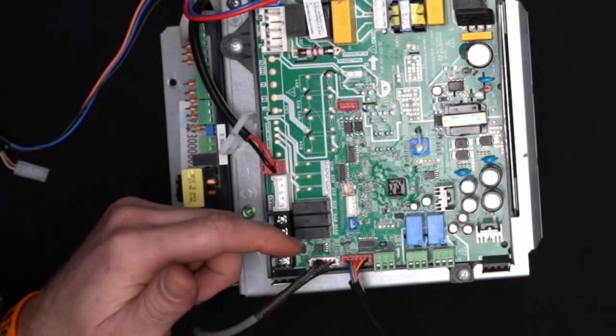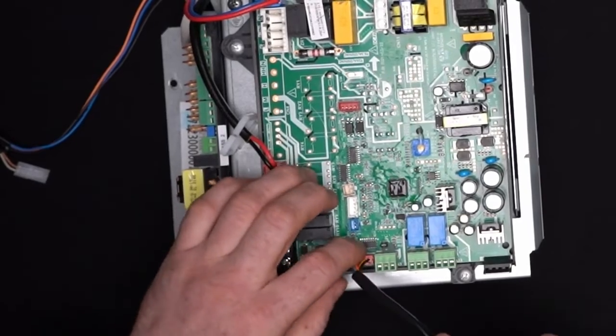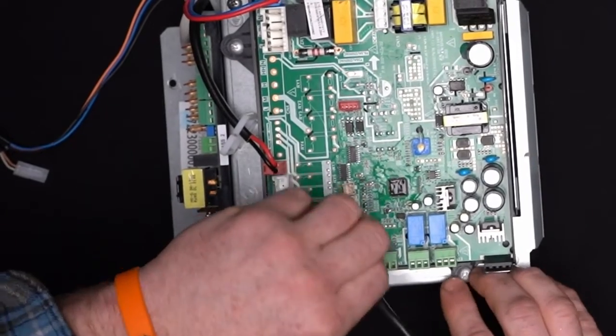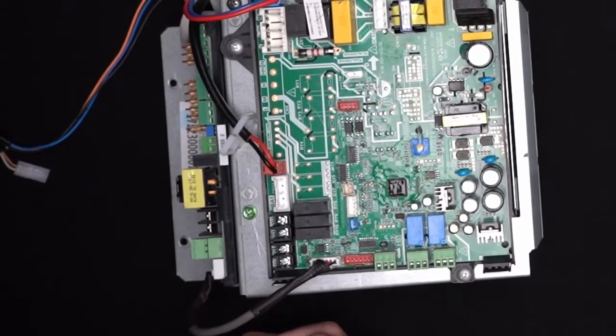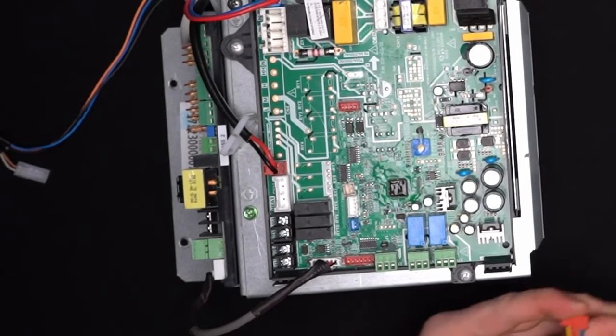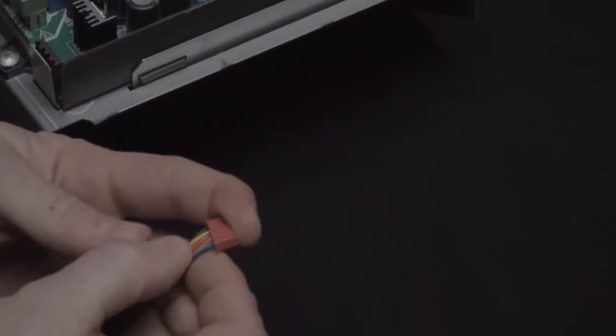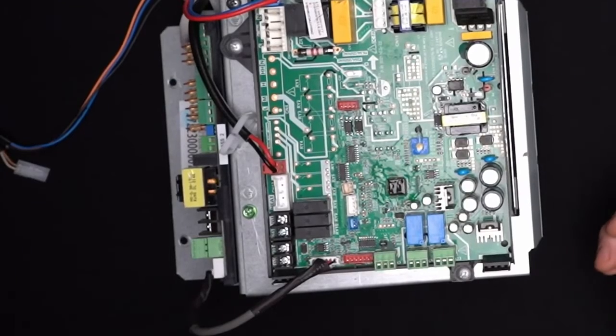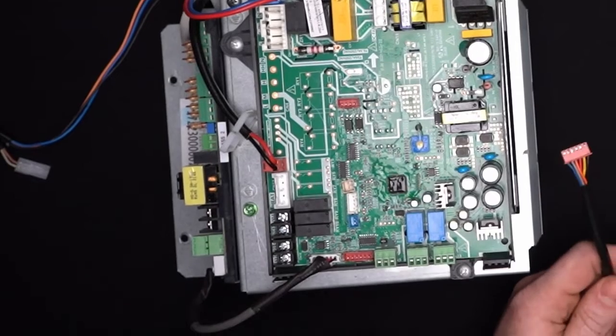So we're going to move down to our electronic expansion valve that is on CN21, and it's marked EXV, and you can see it is a 1, 2, 3, 4, 5, 6-pin connector. Now, if you have an issue with your EEV, I suggest you call technical support, and we'll walk you through the checks on that. But just so you know where it's at, it is on CN21, and we'll move this out of the way.